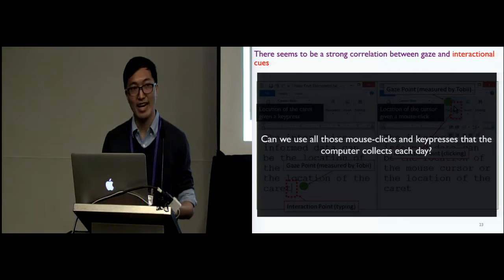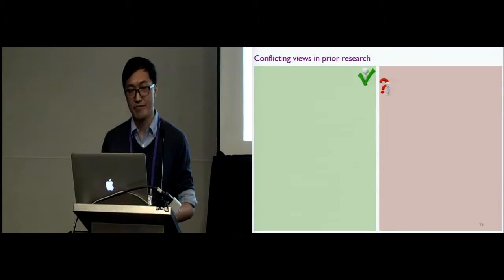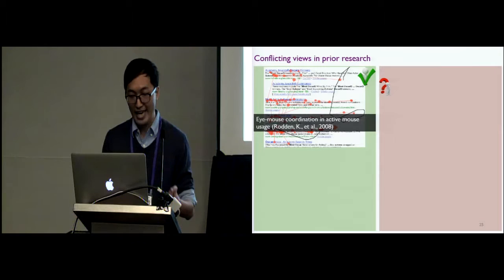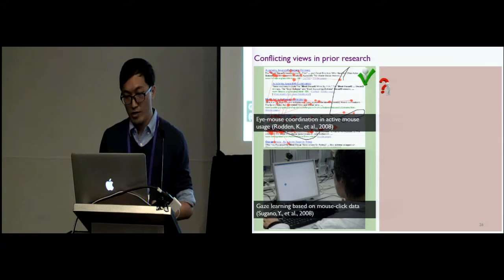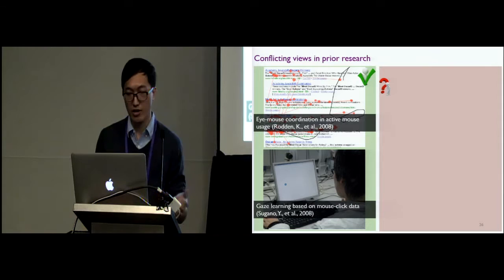The previous work gives us some conflicting information. On the supporting side, Wooden and his colleagues report a strong gaze cursor alignment during active mouse usage, such as using the mouse to follow the eye movement or to mark a particular result. Sugano and his colleagues build an eye tracker using the mouse click based on the assumption that the user are looking at where they click.